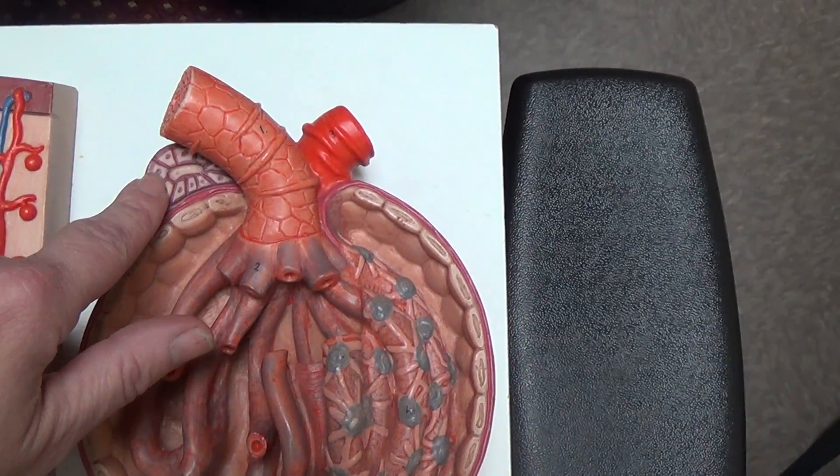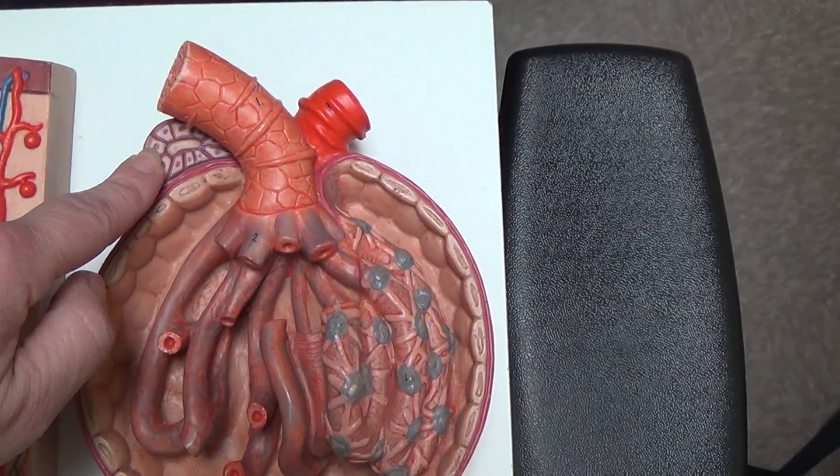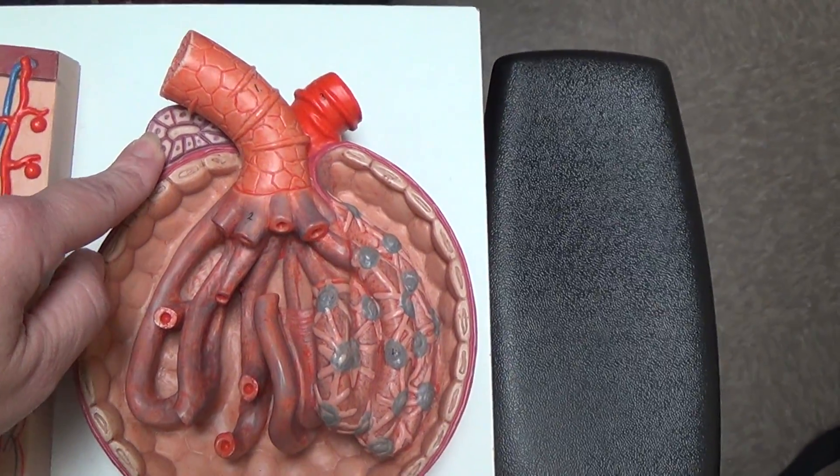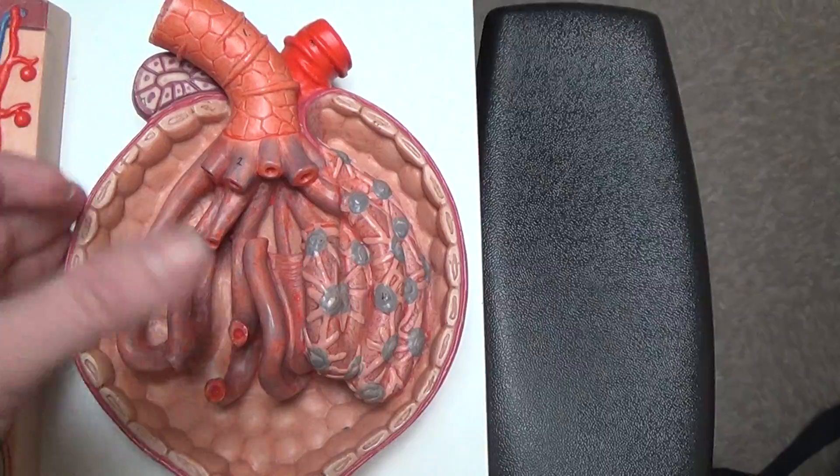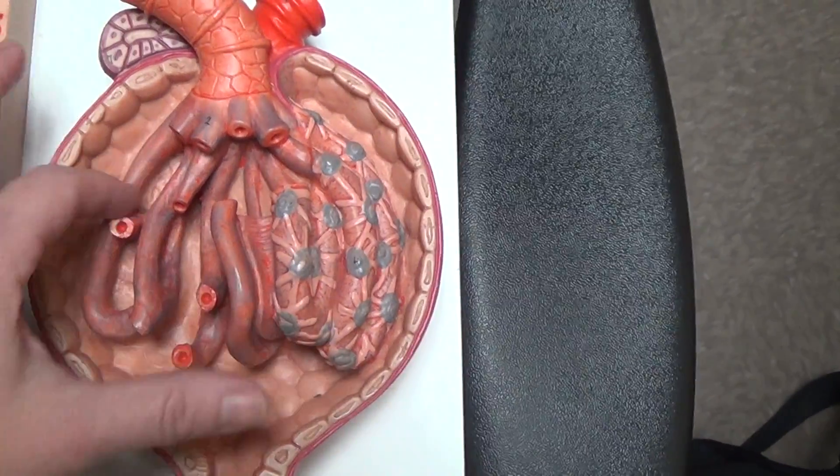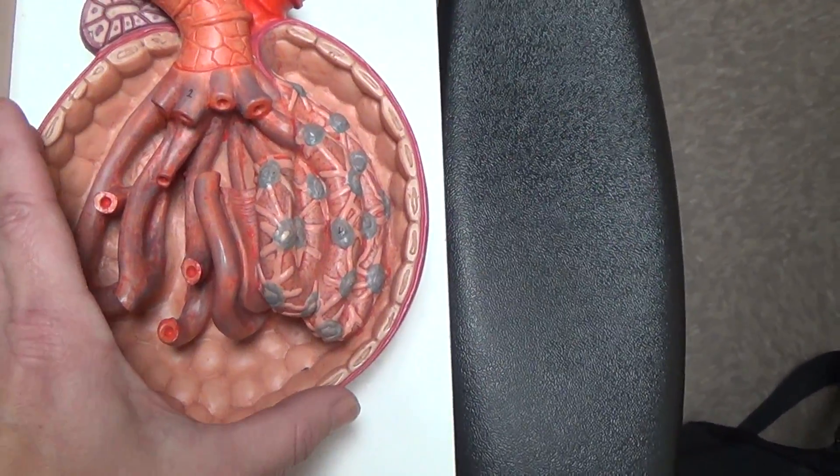This little structure up here is called the macula densa. Now, what's around all of this? Notice there's a space here between the glomerulus and this capsule.